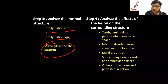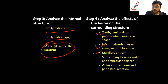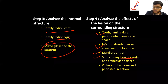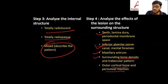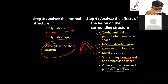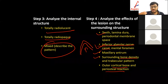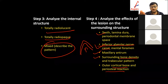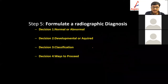We can analyze the effects of the lesion on the surrounding structures: effect on the teeth, effect on the inferior alveolar canal, effect on the maxillary sinus, effect on the surrounding bone density and trabecular pattern, and the effect on the outer cortical bone and periosteal reaction. All other lesions displace the inferior canal inferiorly, but the only lesion which displaces it superiorly is fibrous dysplasia.